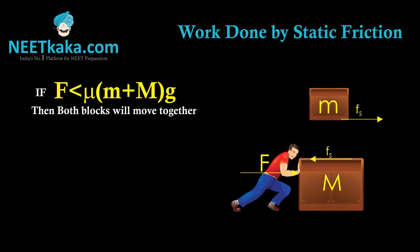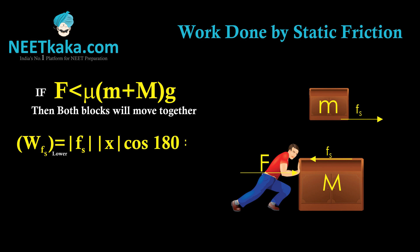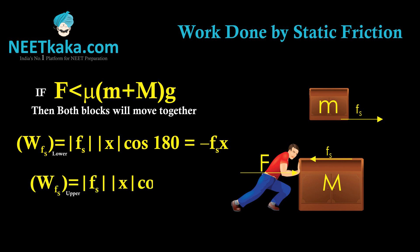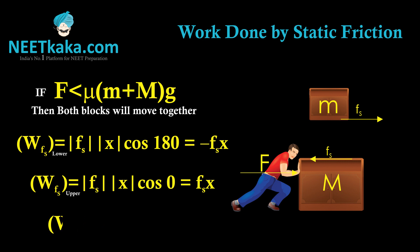Frictional force will act in the backward direction on the lower block and in the forward direction on the upper block. Let us assume that the boxes move through a distance x. So work done by friction on the lower block will be minus Fs times x because it is oppositely directed to displacement. And the work done by friction on the upper block will be Fs times x cos 0, because the force is directed in the direction of displacement, so work done on the upper block is Fs times x.